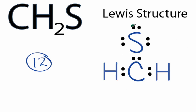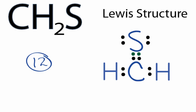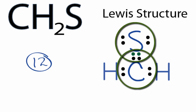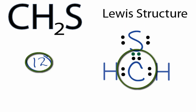Let's move two valence electrons from the sulfur and share them between the carbon and the sulfur atoms to form a double bond. Now the sulfur still has eight valence electrons, and the carbon also has eight valence electrons. And we're still using the 12 valence electrons that we have for this Lewis structure.